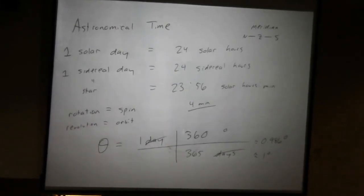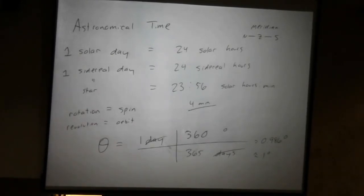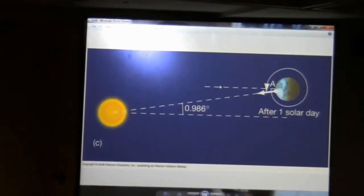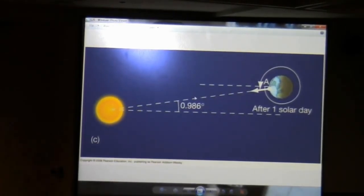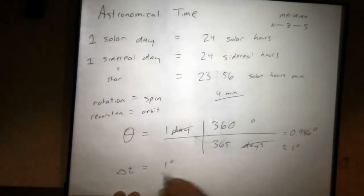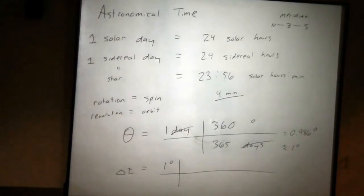So once we've done one sidereal day, then the Earth's going to have to rotate the same amount to be pointed back to the sun. And to see this, you just call upon your intuition or maybe think back to high school geometry. Here we have two parallel lines, this line and this line with an intersecting line between them. So this angle here, the angle Earth travels in its orbit, it's going to be the same as this angle here. The angle that the Earth has to spin to get the sun back on the meridian.